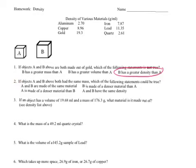Now let's look at number two. Both objects A and B have the same mass. Which of the following statements could be true? And in the case of this one, the answer is that A is made of a denser material than B.